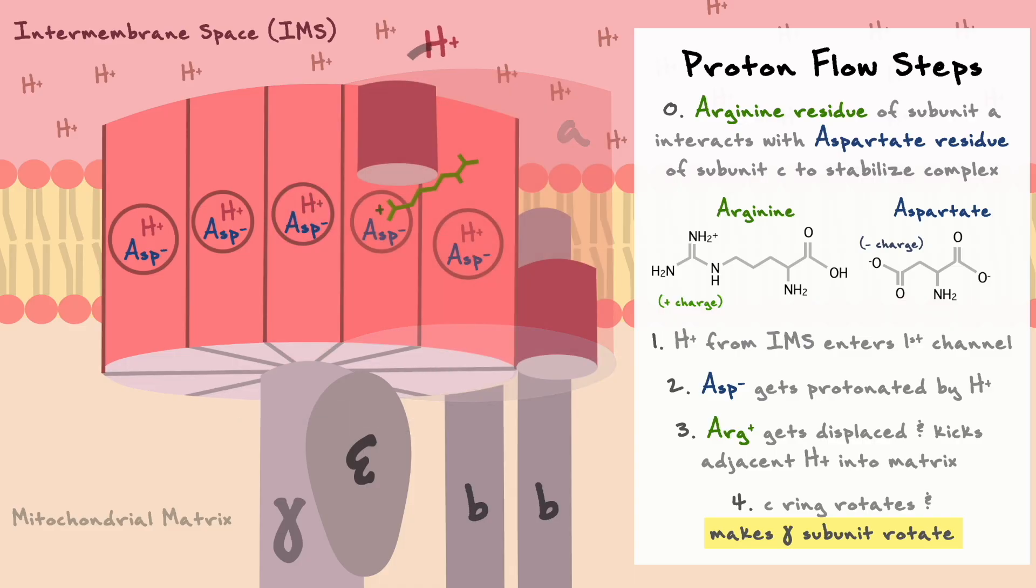As you can see from this process, the proton that enters is not the same as the one that leaves and it takes a full turn around the C ring for that given proton to go from the intermembrane space to the matrix.